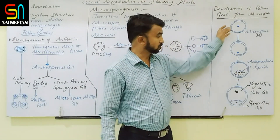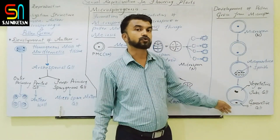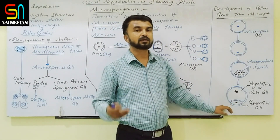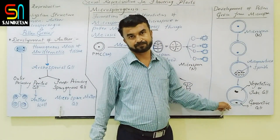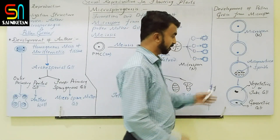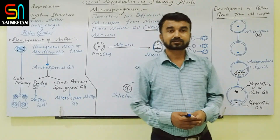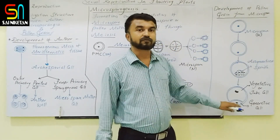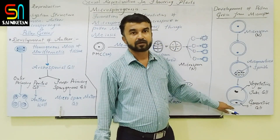Gradually, different wall layers are deposited on the outside — the exine and everything is formed — and the microspore matures into a pollen grain. This pollen grain at this stage is still immature. The next topic is an in-detail study of the pollen grain.